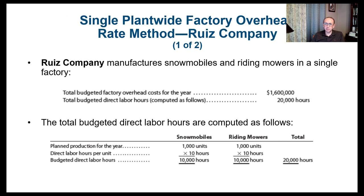Rose Company manufactures snowmobiles and riding mowers in a single factory — so they have two products. The total budgeted factory overhead cost for the year is about $1.6 million. Remember, that's budgeted, not the actual number. We also have budgeted direct labor hours of about 20,000 hours.